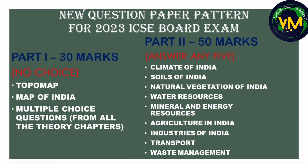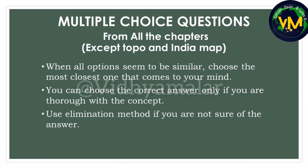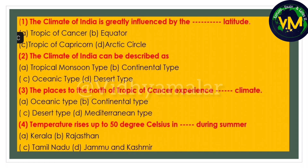In part A, we have MCQs. It carries 10 marks and will be asked from all the theory chapters from climate till waste management. Usually, children find MCQs to be very tough. My suggestion is when all the options seem to be similar, choose the most closest one that comes to your mind. You can choose a correct answer only if you are thorough with the concept, and you can also use elimination method if you are not sure of the answer.